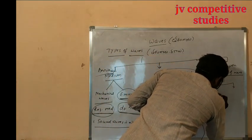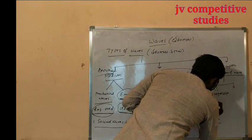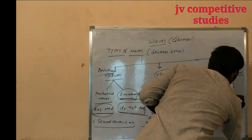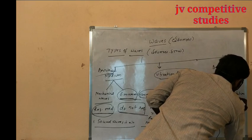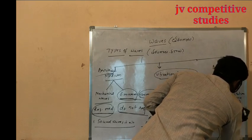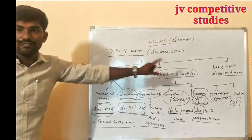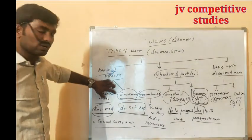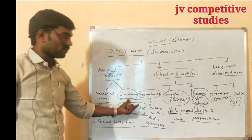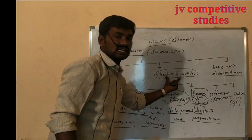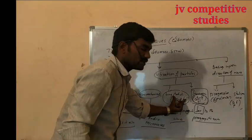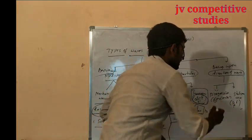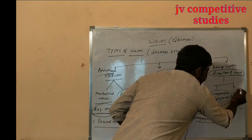First one: Progressive wave — Puroga amit tharangalu. Second: Stationary waves — Stira tharangalu. So waves are classified into two types based on direction: progressive waves and stationary waves. Mechanical waves, electromagnetic waves; longitudinal waves, transverse waves; progressive waves and stationary waves.